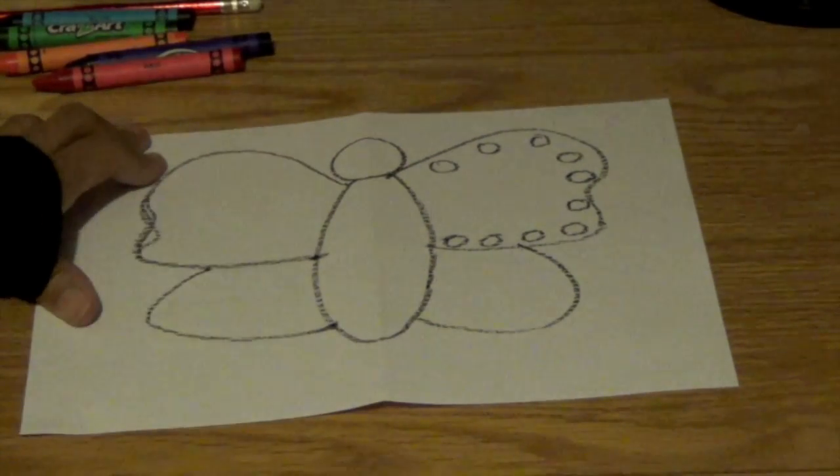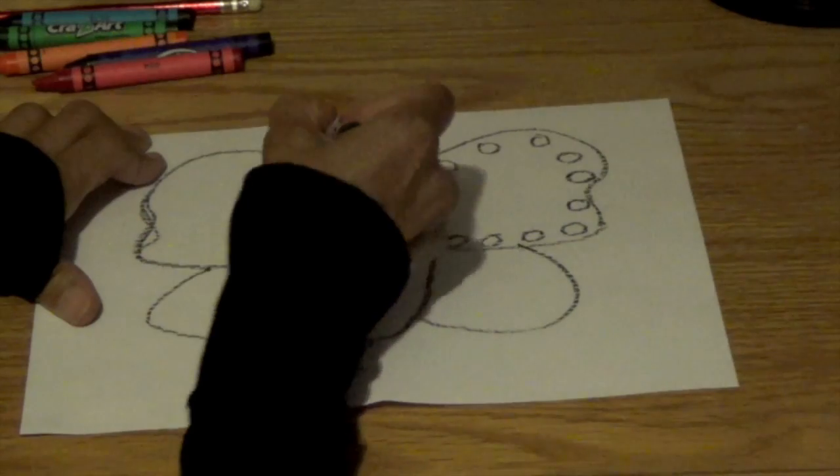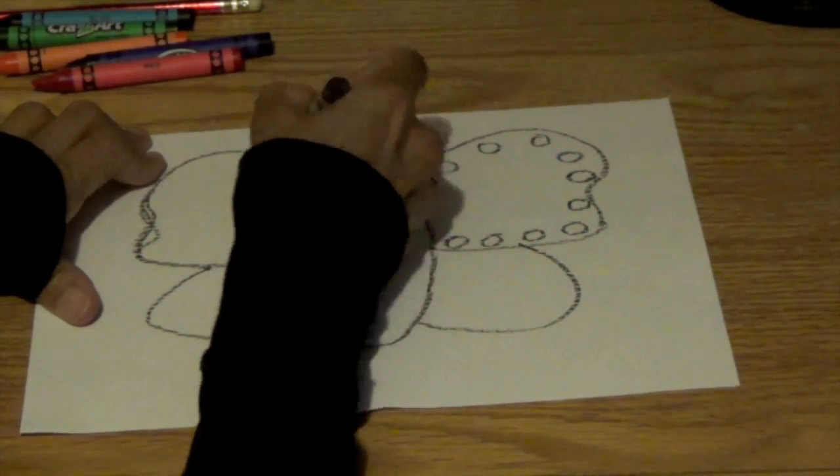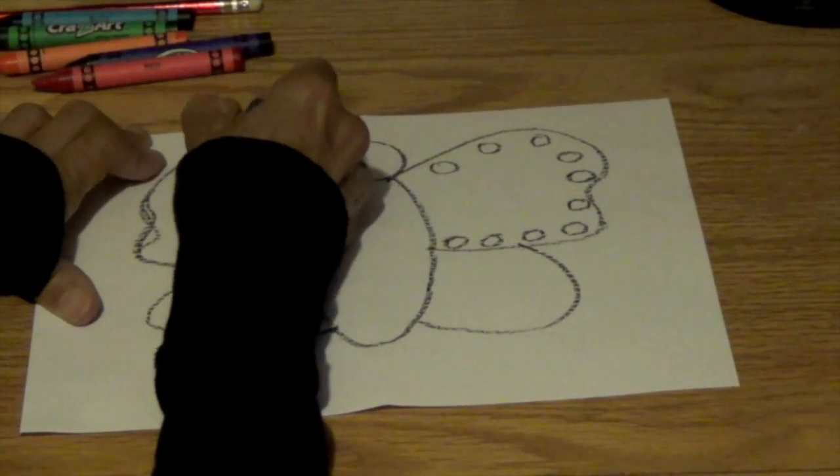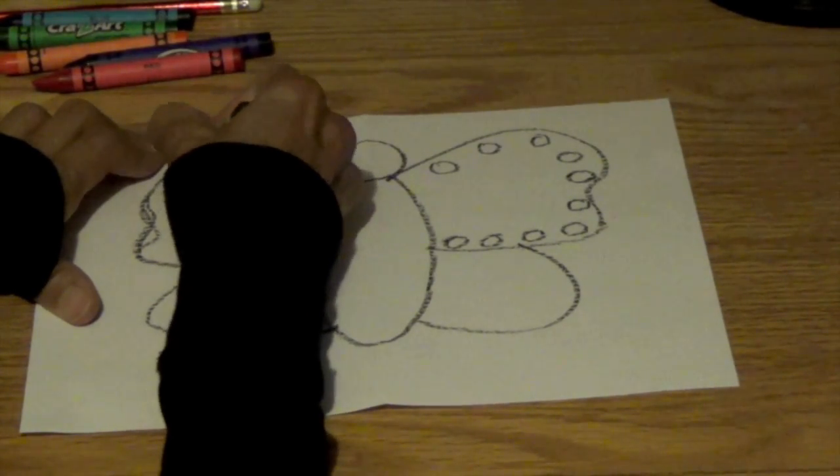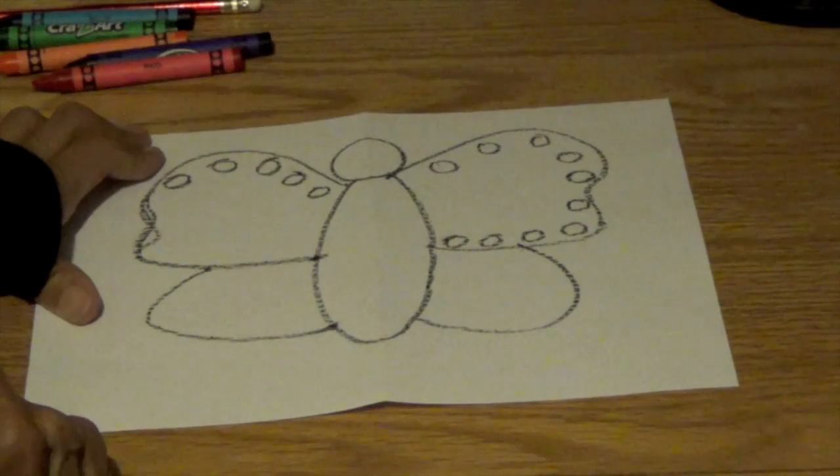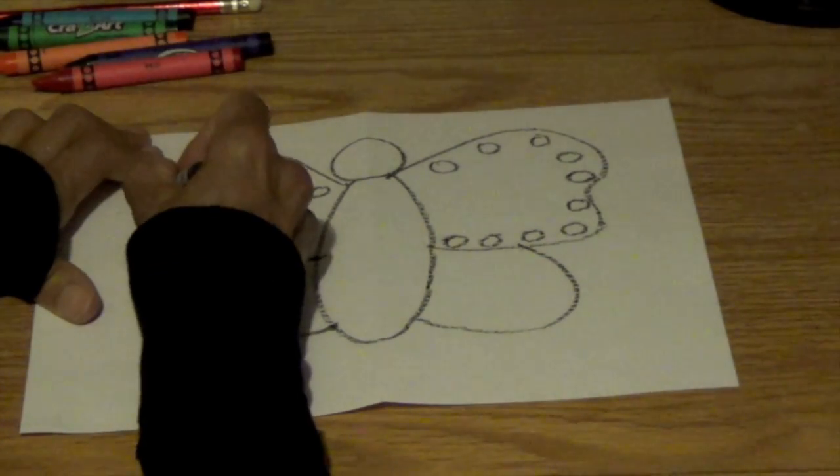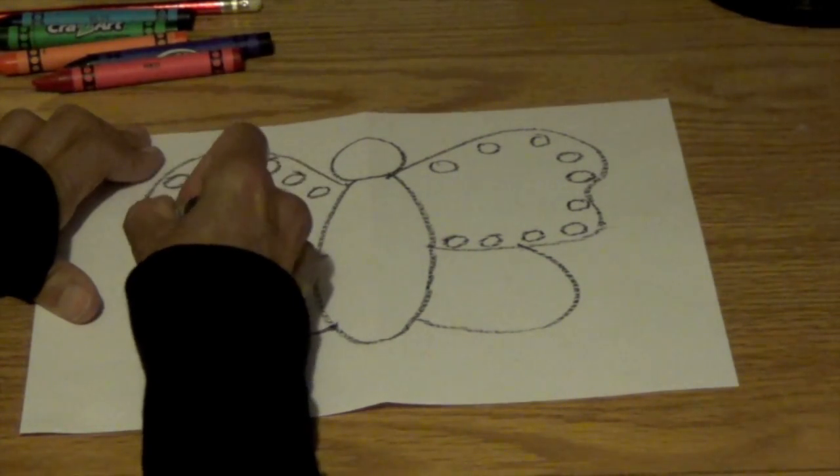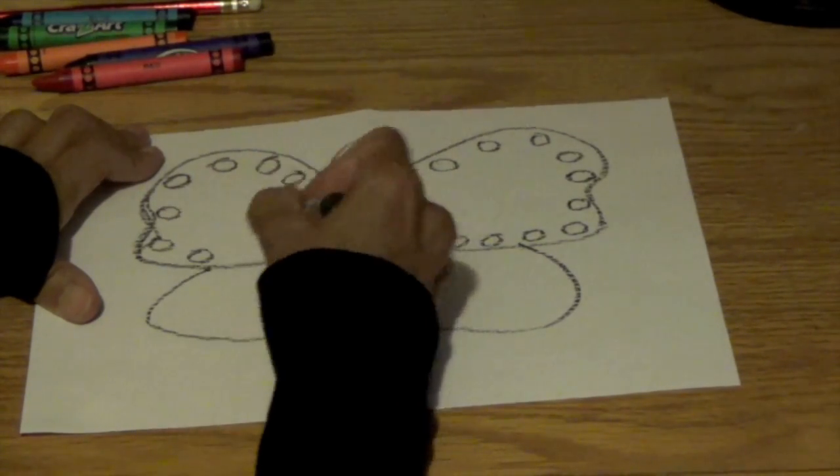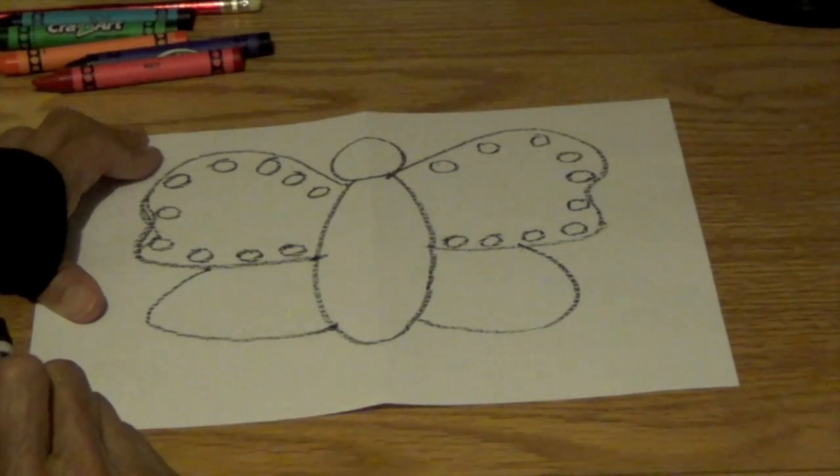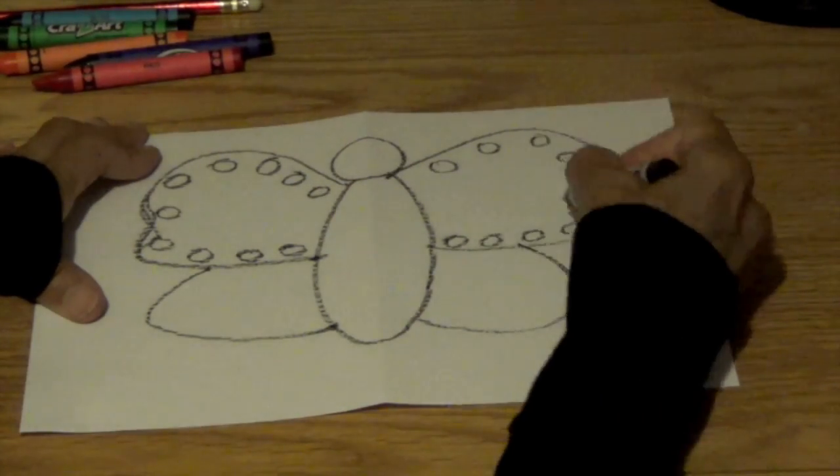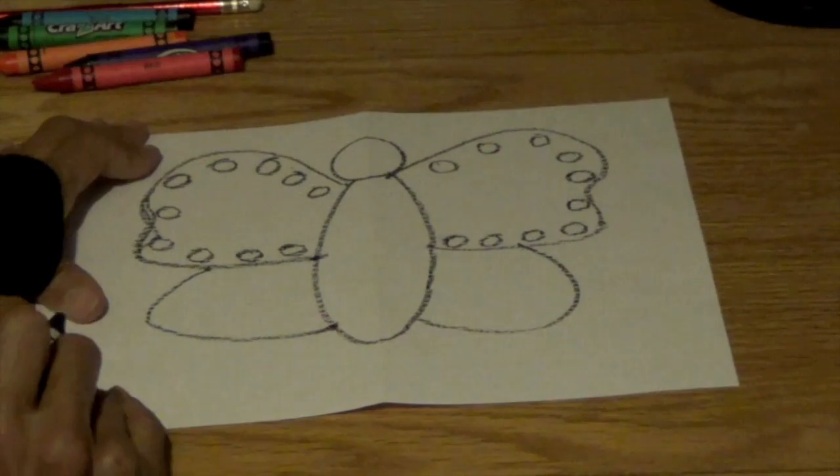I'm going to come over to the other side and draw 10 circles. 1, 2, 3, 4, 5, 6, 7, 8, 9, 10. So you've got 10 circles over here and 10 circles over here.